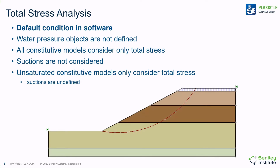If the user does not select any pore water pressure conditions in the model, then the software defaults to a total stress analysis. In this model, the pore water pressure objects are not defined and all constitutive models consider only total stress. It's worth noting that soil suctions are not considered, and unsaturated constitutive models would not consider suctions but only total stress.